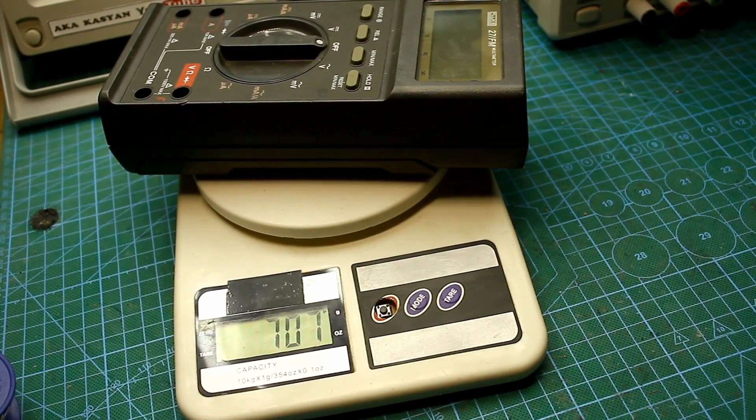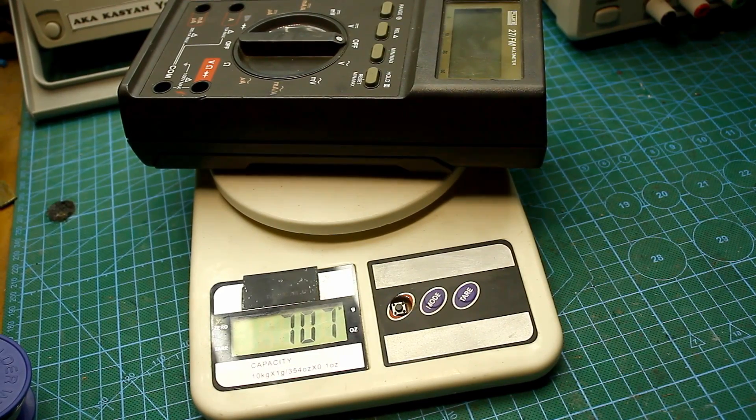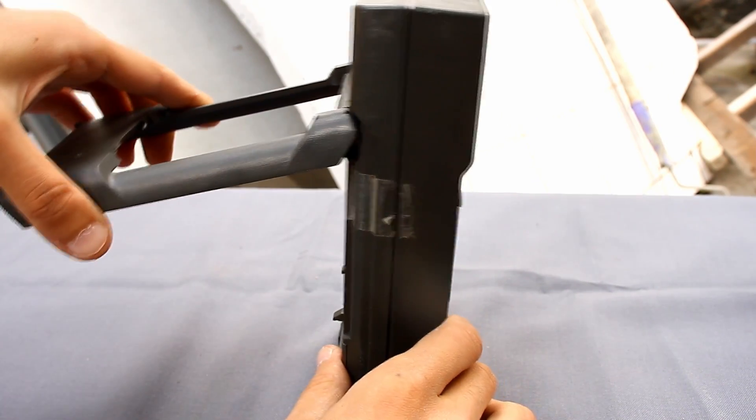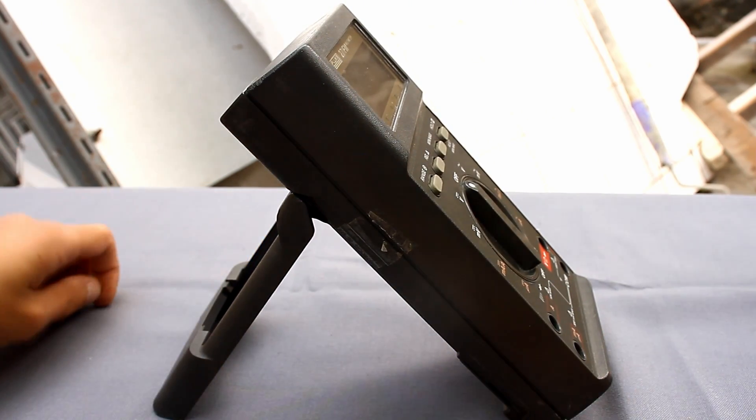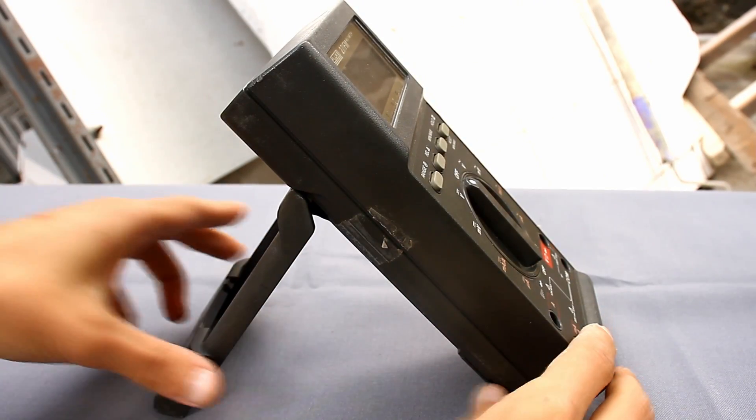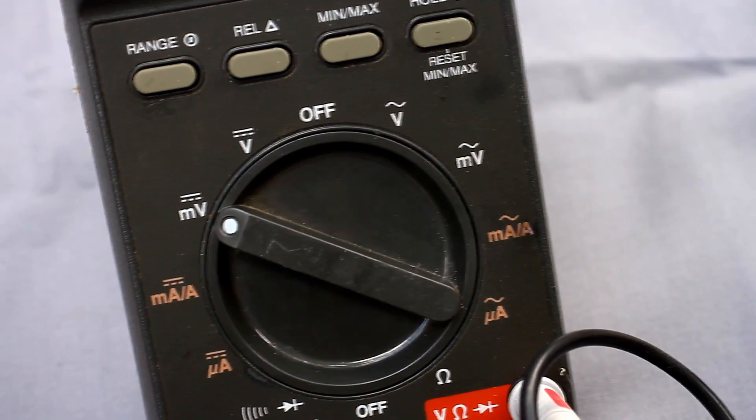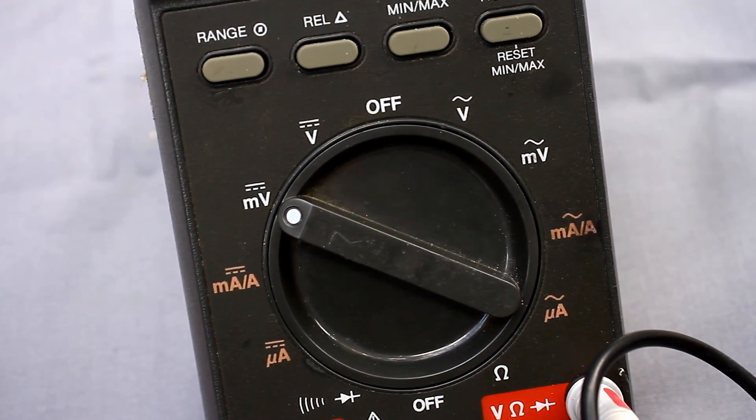The disadvantage is the weight of 700 grams. Yes, you definitely can't call it pocket. It has a comfortable stand with one stable state, but in fact the multimeter stands securely on the table in several positions of this stand. Now let's go to measurements and checking accuracy.